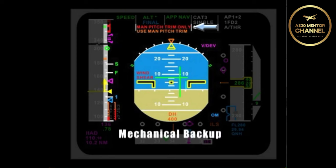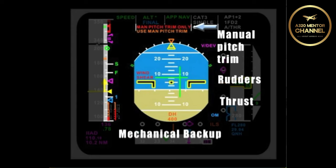What items are available in mechanical law? Well, not really too much. You will have manual pitch trim just as the enunciator indicates. Then, you have two other controls. The rudders are available, connected directly by cables to hydraulic actuators, which allow rudder movement.